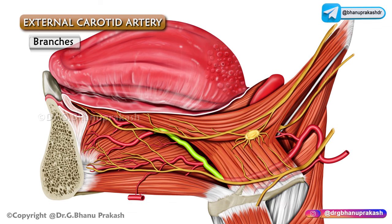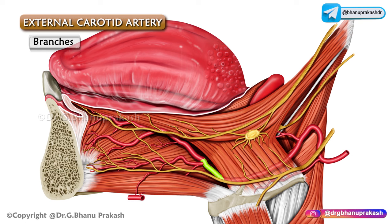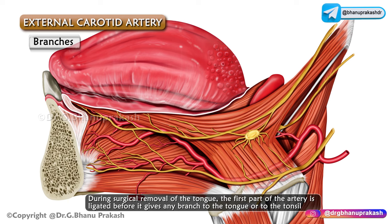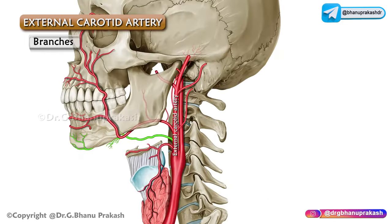The third part, called the arteria profunda linguae or deep lingual artery, runs upwards along the anterior border of the hyoglossus and then horizontally forwards on the undersurface of the tongue, accompanied by the lingual nerve. The lingual artery gives branches including the suprahyoid, dorsal lingual, and sublingual arteries. During surgical removal of the tongue, the first part of the artery is ligated before it gives off any branch to the tongue or tonsil.